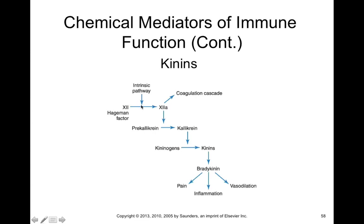The pathway that leads to kinin production requires something called the Hageman factor. Going back to the clotting cascade, the Hageman factor is the common factor necessary for both the extrinsic and intrinsic pathways of your clotting cascade. So once the Hageman factor is activated, it promotes blood coagulation but also promotes the production of kinins like bradykinin, which cause pain, promote inflammation, and promote vasodilation to increase blood flow to infected or inflamed tissue.